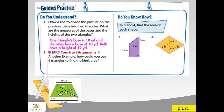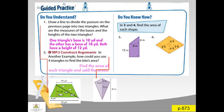Now let's have question number two. In another example, how could you use four triangles to find the kite's area? Here's the figure of a kite. You would do so by finding the area of each triangle and adding the areas together.